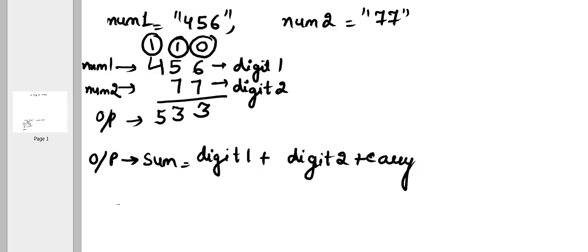So in the first case carry is 0. Digit 1 plus digit 2 plus carry. Again carry is 1, digit 1, digit 2 and carry. So this is how we are finding the sum.